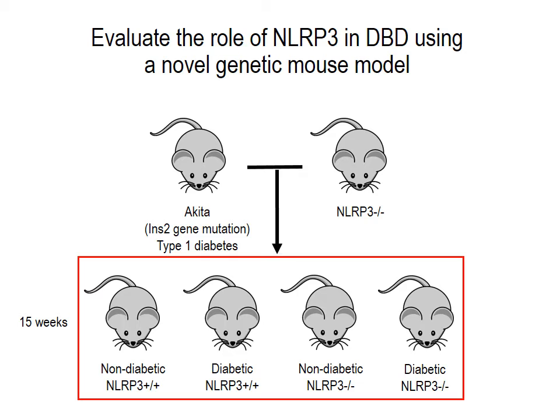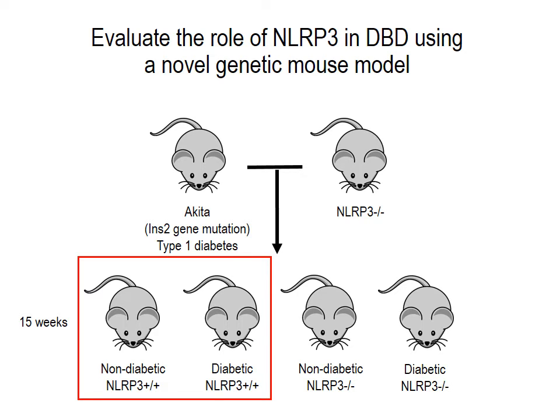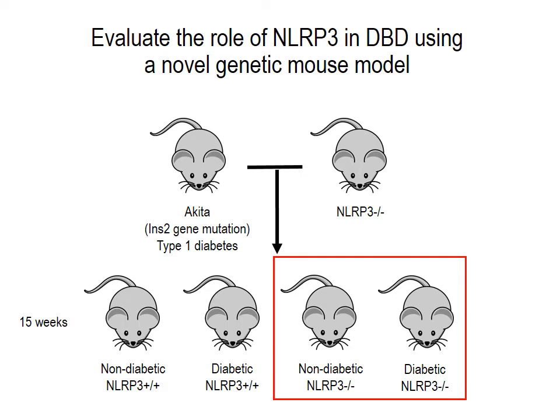We cross-bred the type 1 diabetic Akita mice with NLRP3 null mice, and this yielded four distinct groups. We had non-diabetic and diabetic mice with NLRP3, and we had non-diabetic and diabetic mice without NLRP3.